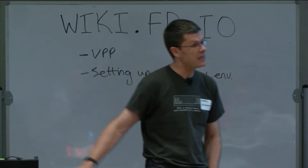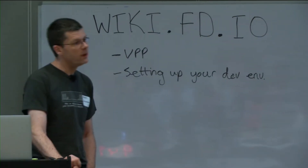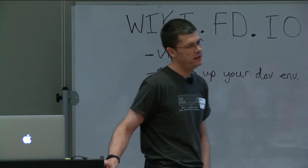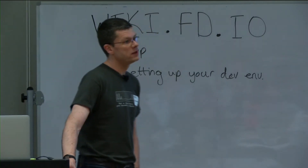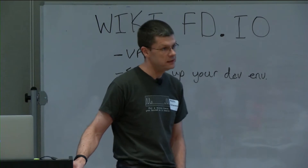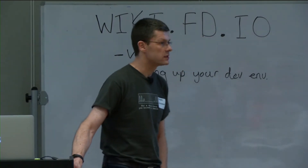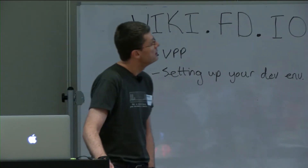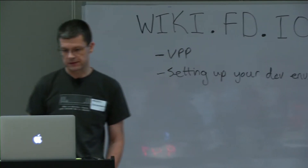The 64-byte is actually not a full frame length. Always, always, always add 20 bytes — there's an interframe gap, there is preamble. Whether it is 10 meg, 100 meg, 1 gig, 10 gig, 40 gig, or 100 gig Ethernet, the same formula works, because the sub-layer in Ethernet has not changed. So we have a line rate of 14.88, and we're going to show how this thing does 12 times that.